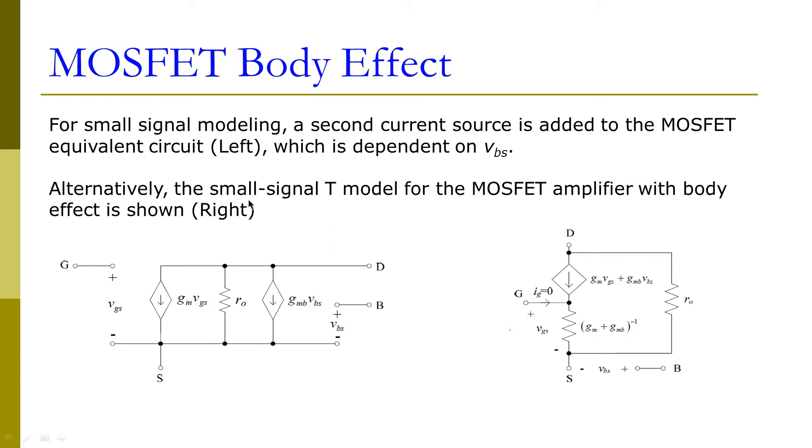Alternatively, the small signal T model for the MOSFET amplifier with body effect is shown on the right. Here we have gm*Vgs plus gmb*Vbs together to form the current.